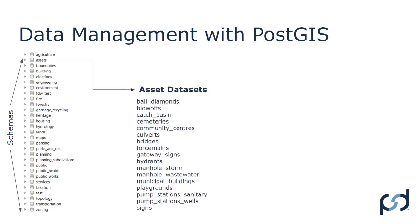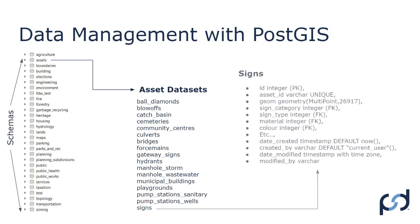Looking at assets, within the asset schema you might have tables for ball diamonds, blowups, catch basins, cemeteries, and so on. What would a typical data set look like? Let's look at signs. Signs will have an ID value — an integer — it'll be a sequence, and that's going to be our primary key for the table. We'll have something called an asset ID, which will be a varchar, and it will have that unique constraint placed on it.